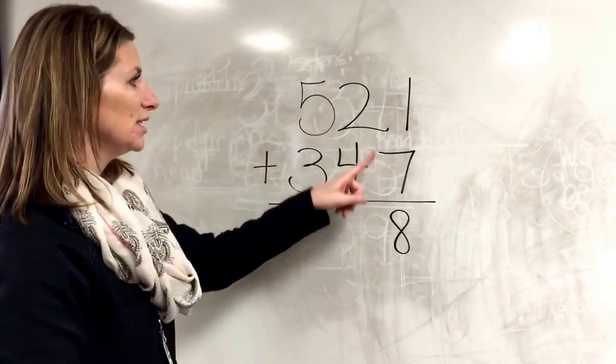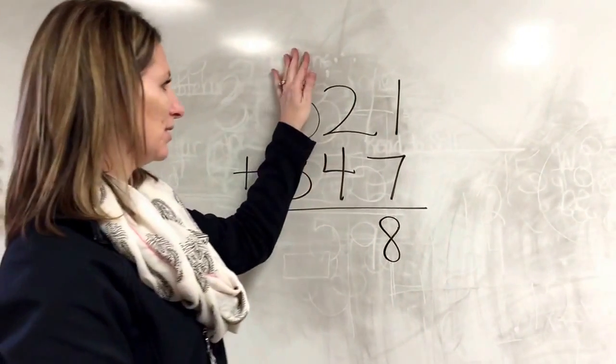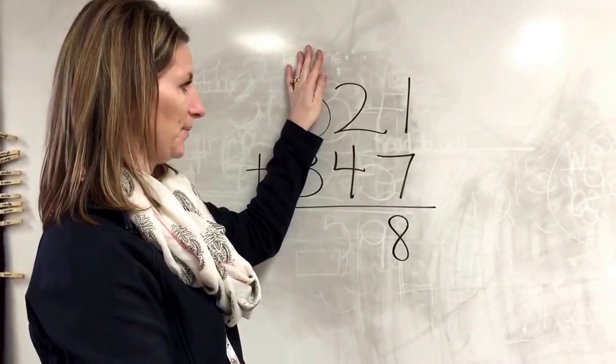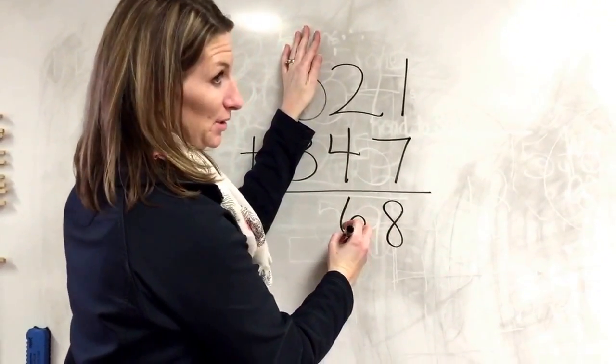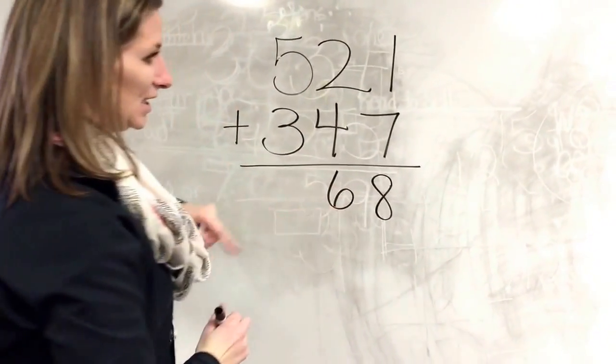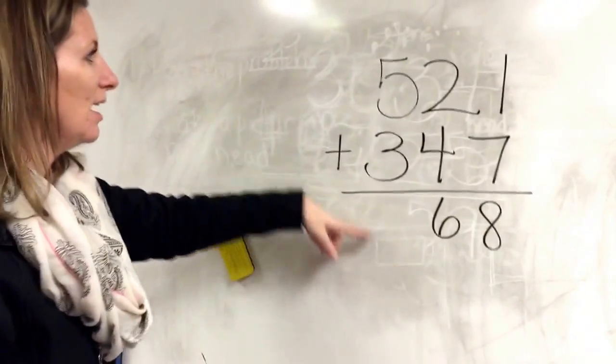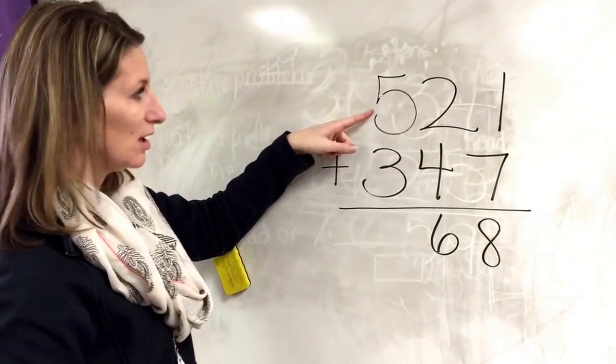Then I go to the tens column. Don't let these other numbers freak you out yet. Four, five, six. Nine and below stay low—there's my six down, staying low. And then I go to the hundreds column.